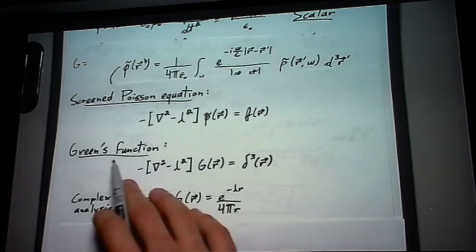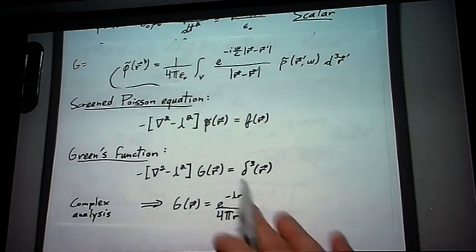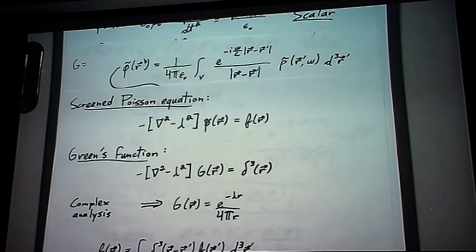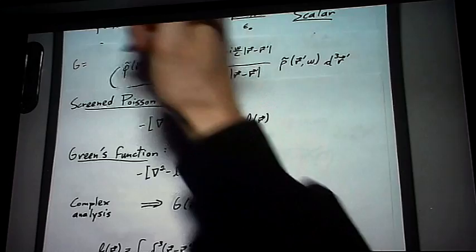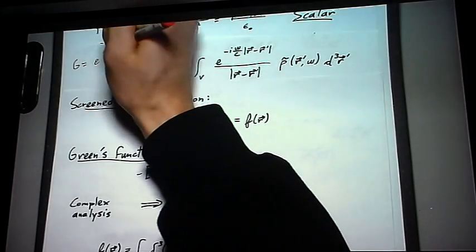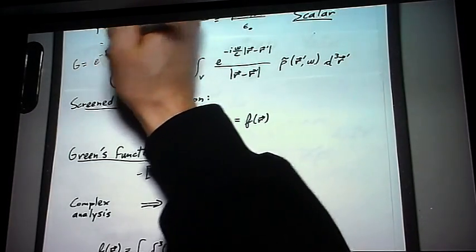So if we want to define the Green's function for delta function r minus r prime, then it'll simply be g, so r minus r prime, and that will look like e to the minus lambda, and taking the norm.